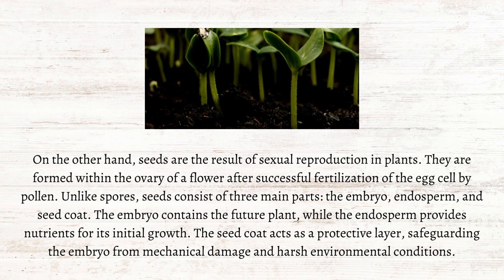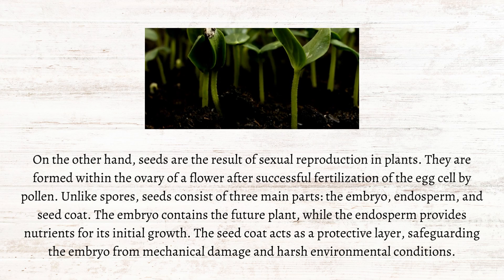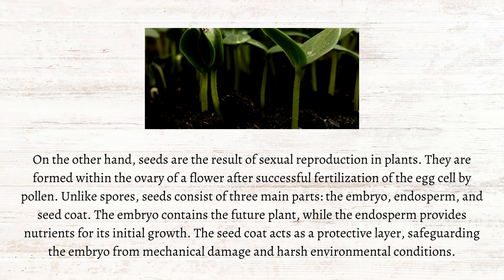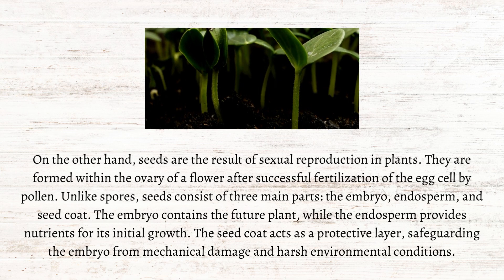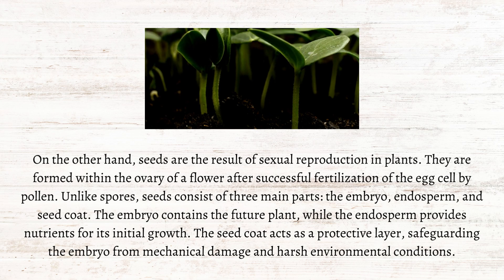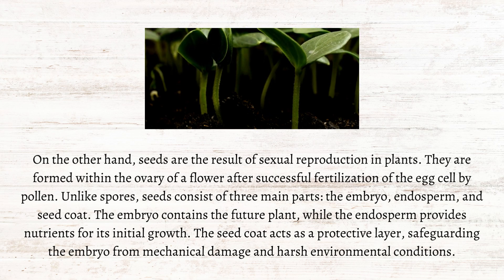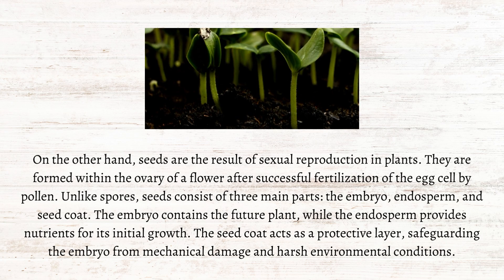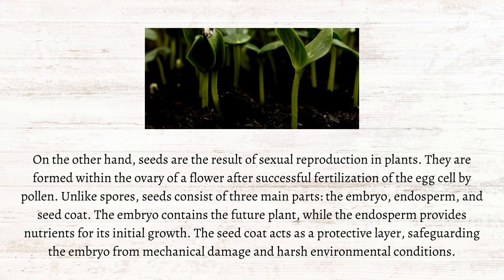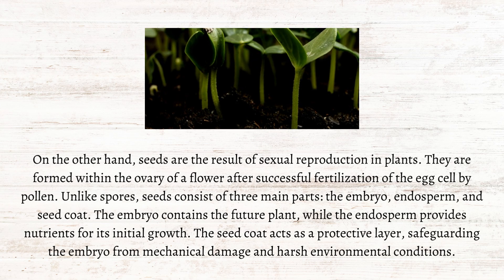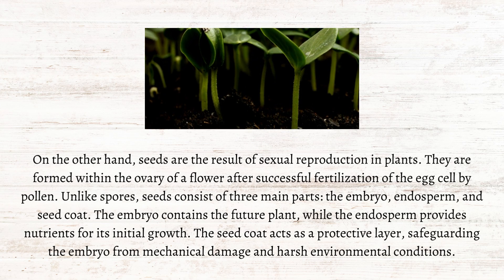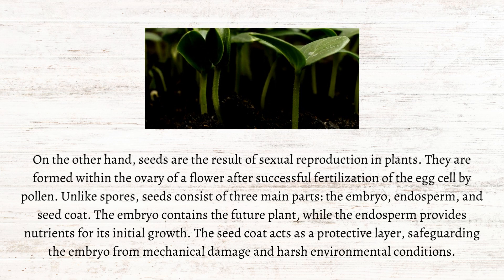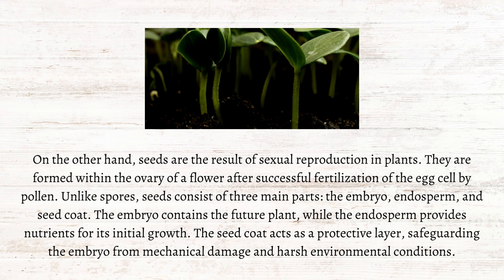On the other hand, seeds are the result of sexual reproduction in plants. They are formed within the ovary of a flower after successful fertilization of the ovule by pollen. Unlike spores, seeds consist of three main parts: the embryo, endosperm, and seed coat. The embryo contains the future plant, while the endosperm provides nutrients for its initial growth. The seed coat acts as a protective layer, safeguarding the embryo from mechanical damage and harsh environmental conditions.